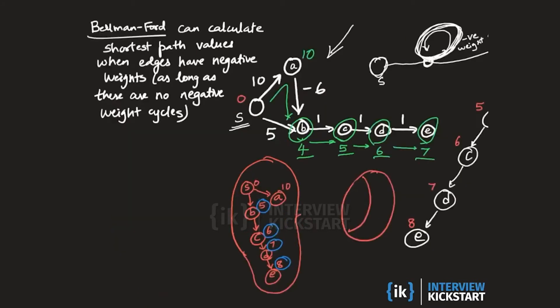It turns out that Bellman-Ford can calculate shortest path values even when edges have negative weights, as long as there are no negative weight cycles. The shortest path values are well-defined and Bellman-Ford can be used to give us those optimum shortest path values.